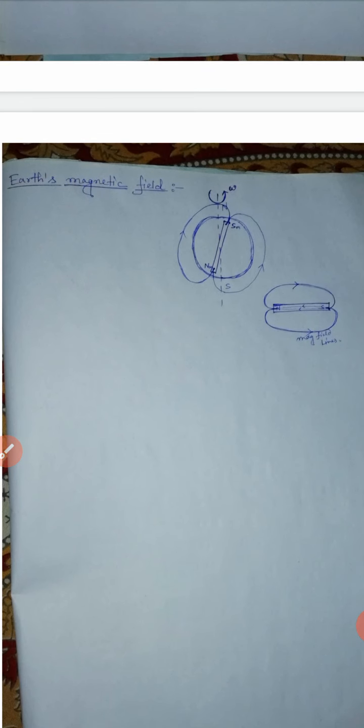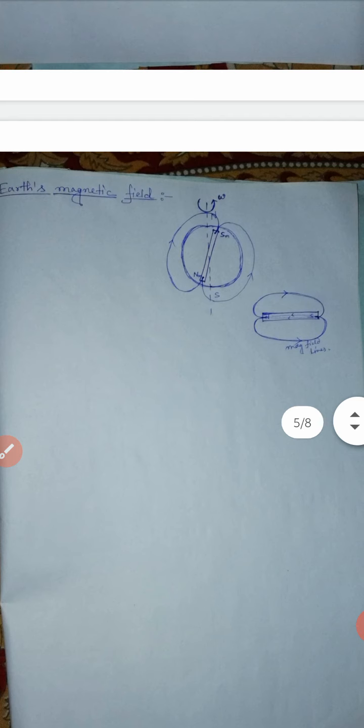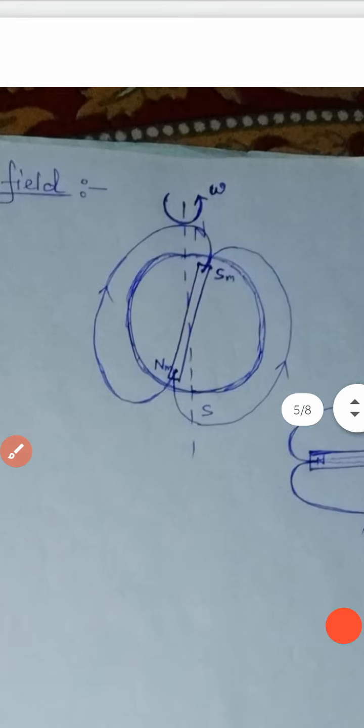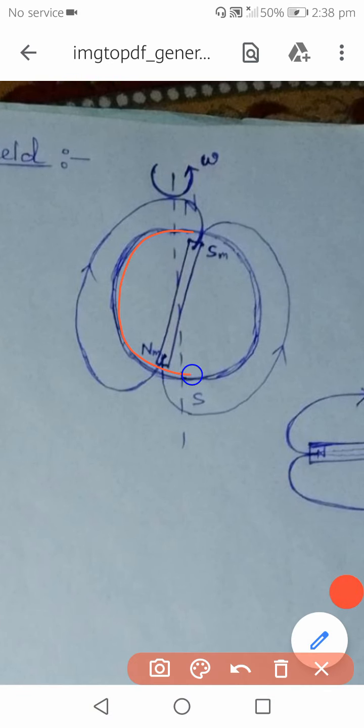The next topic is Earth's magnetic field. The Earth rotates about its own axis with angular speed ω, and due to this rotation a magnetic field is generated at the center of the Earth. That is why we say the Earth also behaves like a magnet.